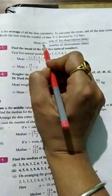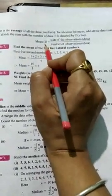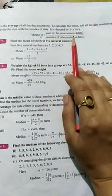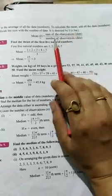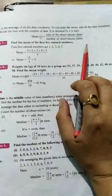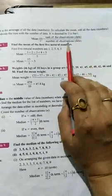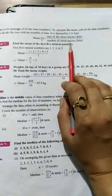Mean is denoted by x bar. It is denoted by x and then bar will come. So how to calculate mean? Sum of the observations divided by number of observations. Number of observations means you will count how many observations are there. So this is a formula for mean.